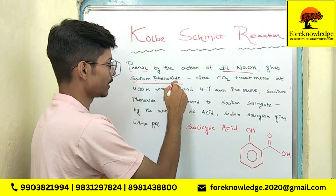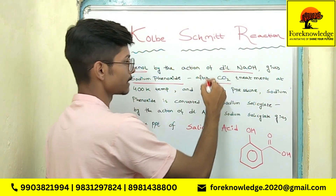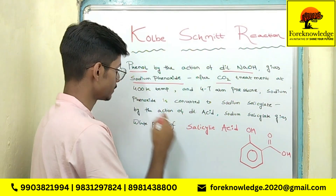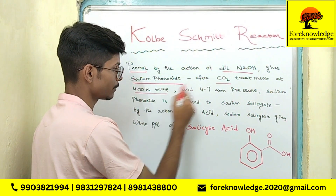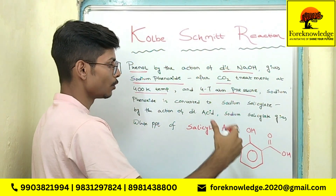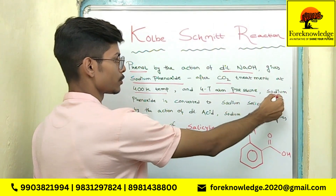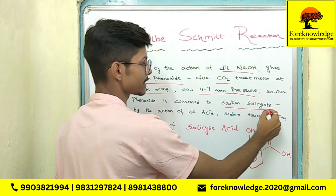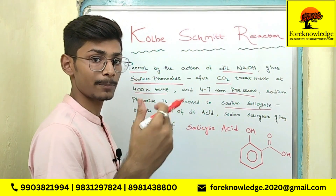In the second step, sodium phenoxide will react with CO₂, that is carbon dioxide. Keeping in mind, at 400 Kelvin temperature and 4 to 7 atmospheric pressure, sodium phenoxide will be converted to sodium salicylate. So this will be step 2.